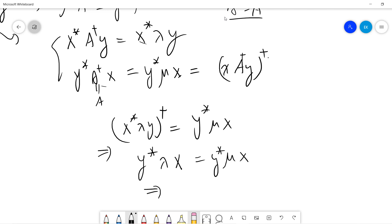So lambda minus mu times y dagger x is zero. Since lambda is not the same as mu.